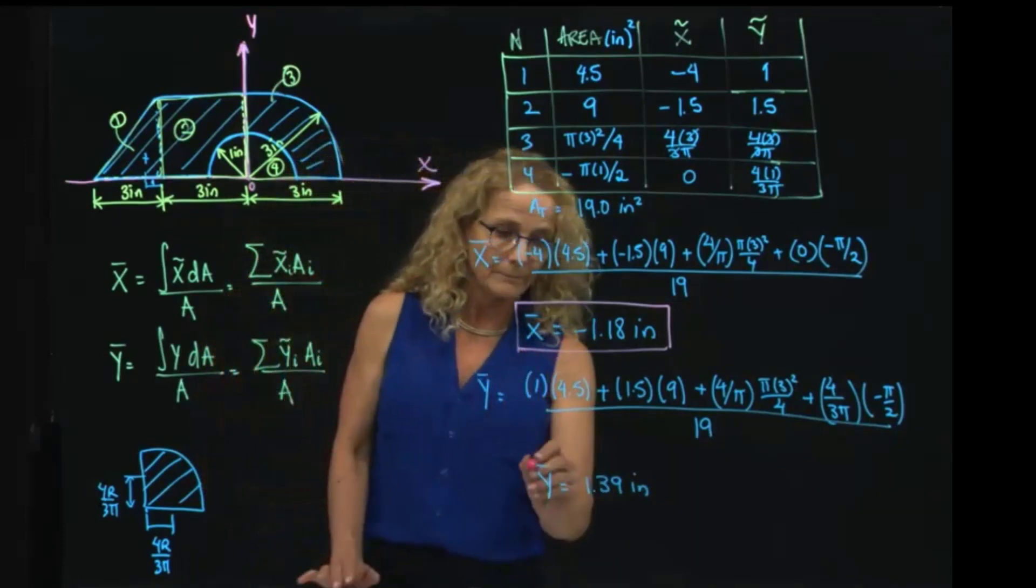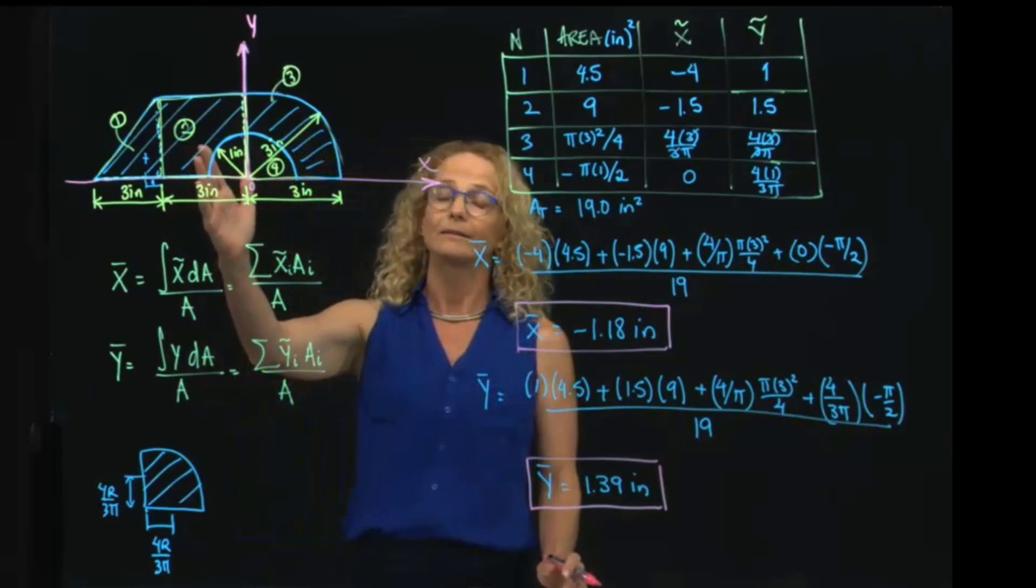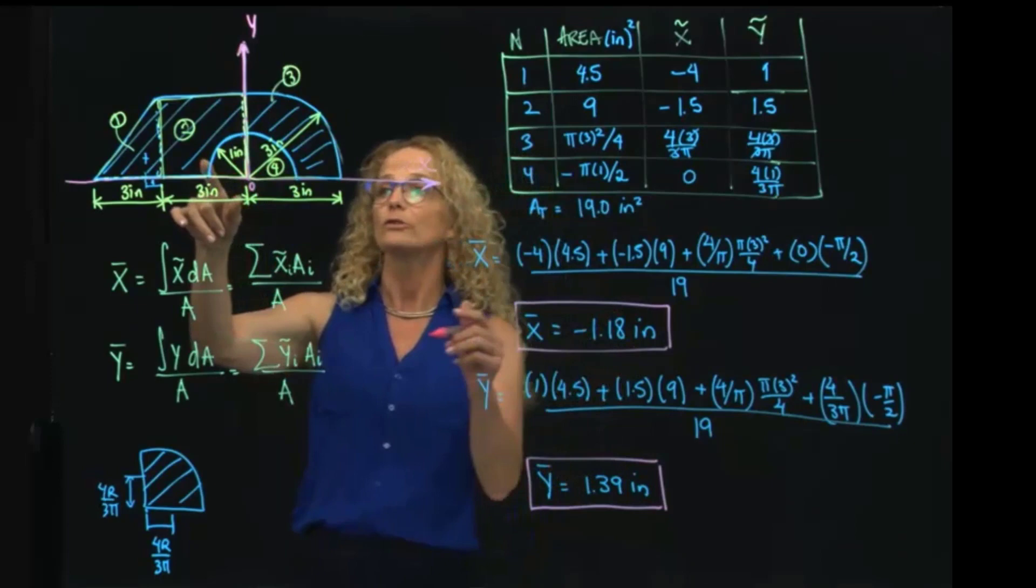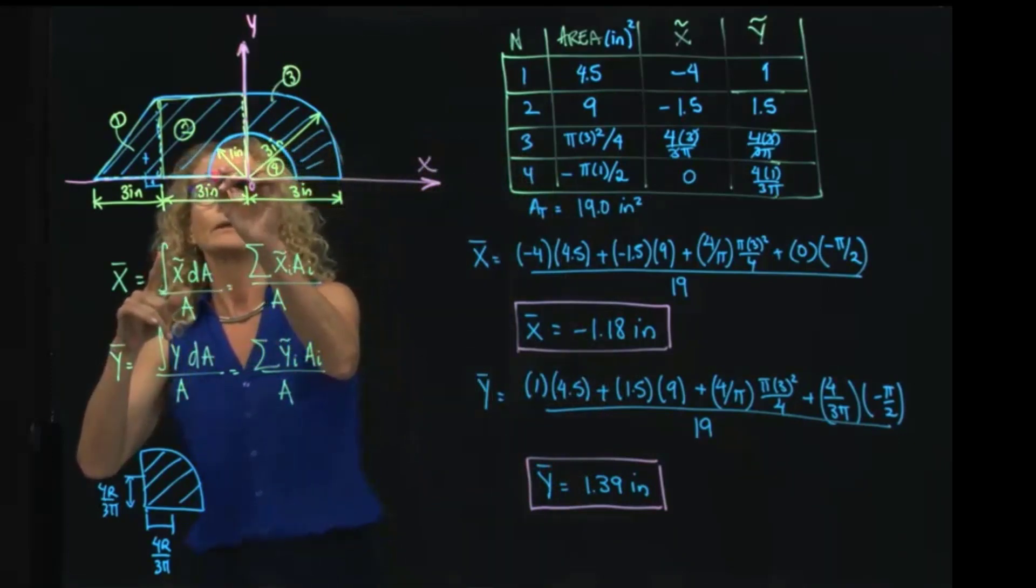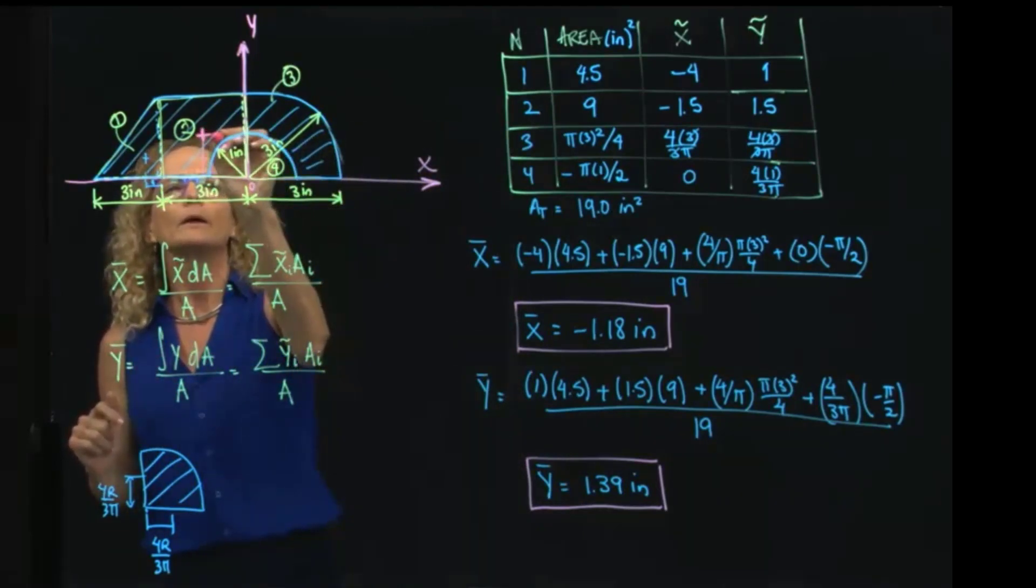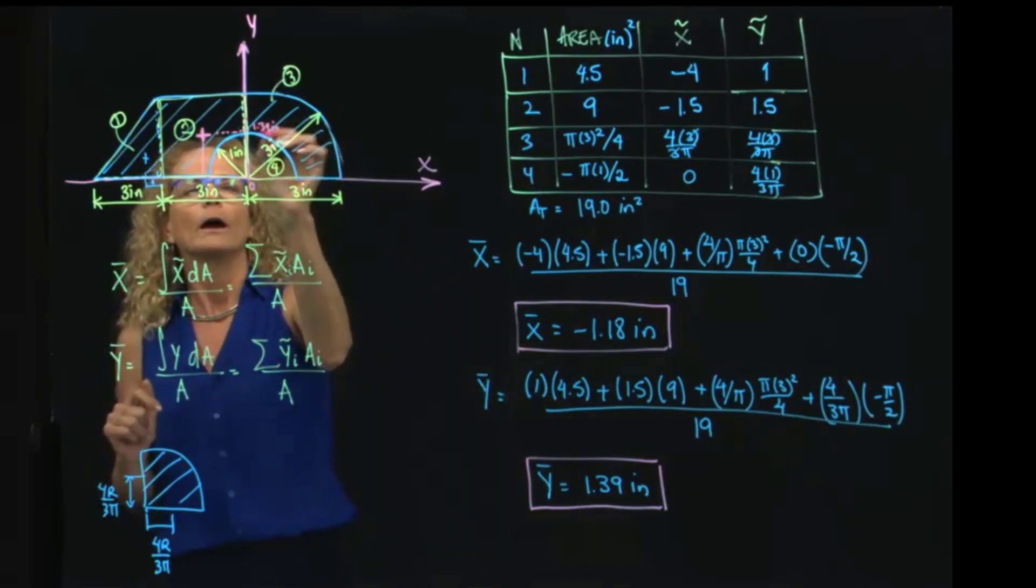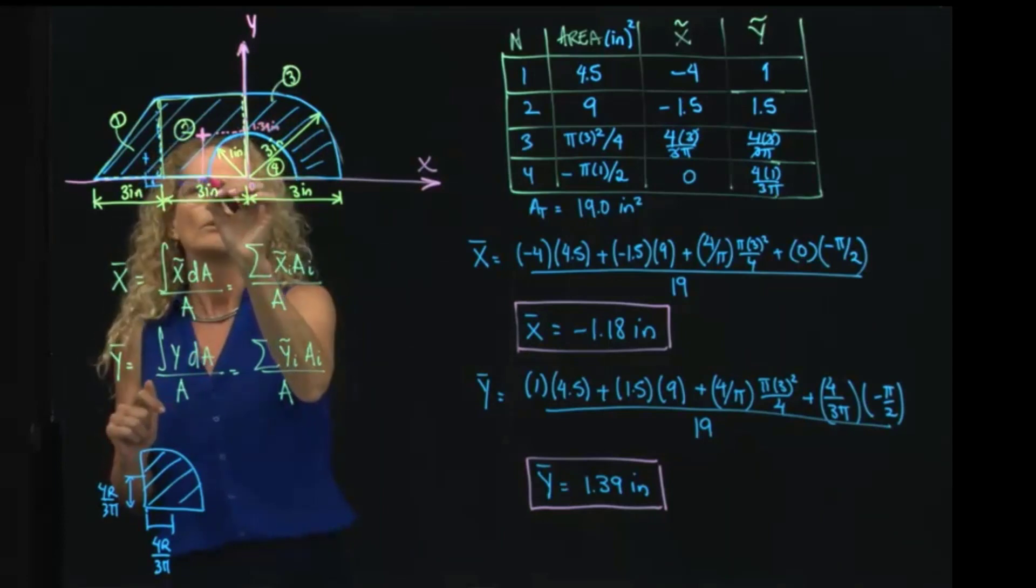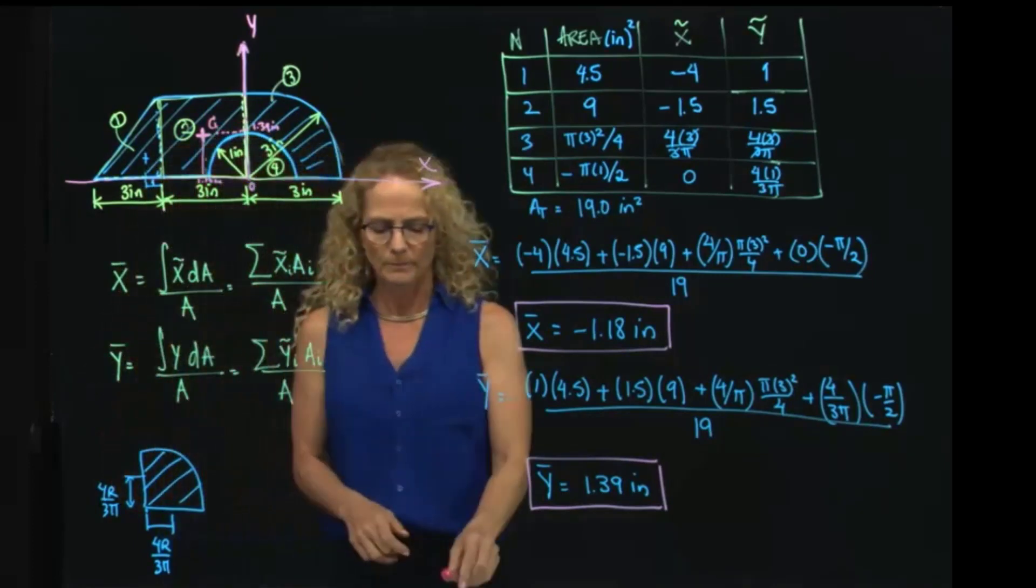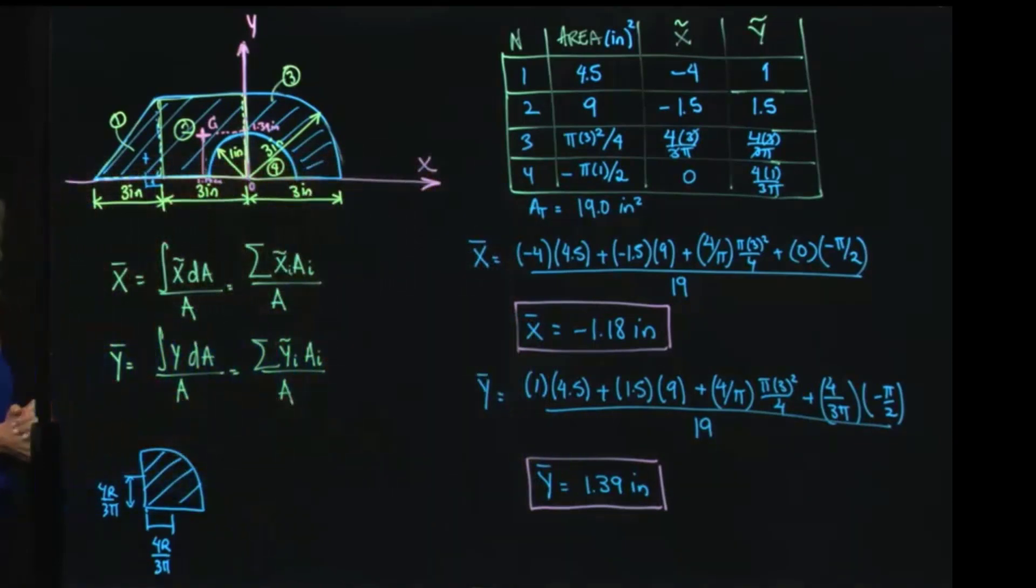So it means that my centroid is located to the negative axis of x and the positive axis, so it's a little bit beyond 1 inch in the x axis, so it will be around here, and it's above 1 inch. So it will be located somewhere around here, where this is 1.39 inches and this is 1.18 inches. So this is my centroid of the whole figure, and that's the solution for this problem. Thank you.